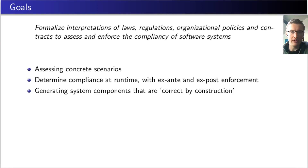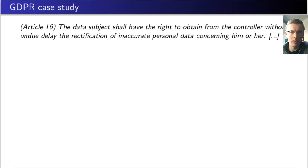Ideally, we can generate system components that are correct or compliant by construction. However, this is not something we discuss in this paper. The paper is focused on the design of EFLINT, and this design is evaluated using the GDPR regulation as a case study. The GDPR is a regulation from the European Union relating to privacy and data protection in general, and it is the reason that we see cookie pop-ups on basically every website nowadays.